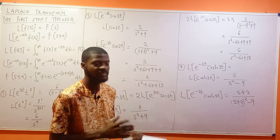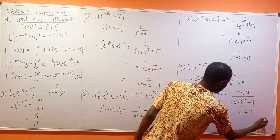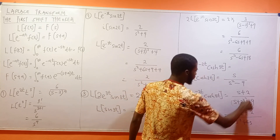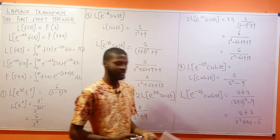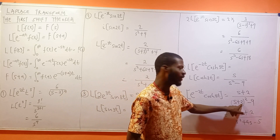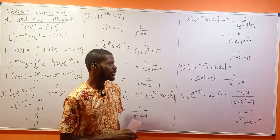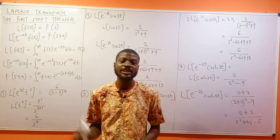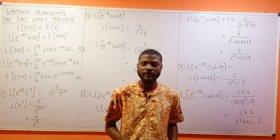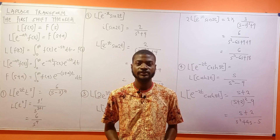We can simplify this expression. Opening (s+2)² gives s² + 4s + 4, then minus 9 is s² + 4s minus 5. So the result is (s + 2) over s² + 4s minus 5. That is the answer for Example 4. The next video will be on the multiplying by t theorem. This is the first shift theorem — thank you very much for watching.